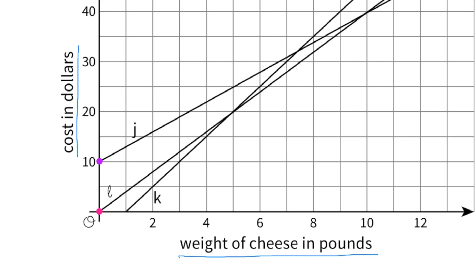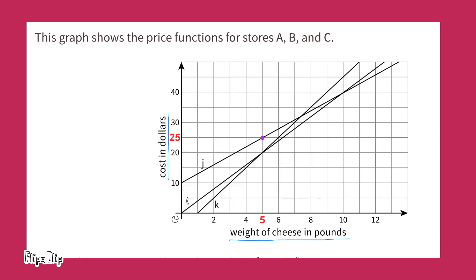Directly above the origin I labeled a point that represents ten dollars for zero pounds of cheese, and you can see the cost of cheese increasing as the number of pounds increases. At five pounds on the horizontal axis, the cost falls exactly between twenty and thirty dollars, which would be twenty-five dollars. So at this particular store, five pounds of cheese costs twenty-five dollars.